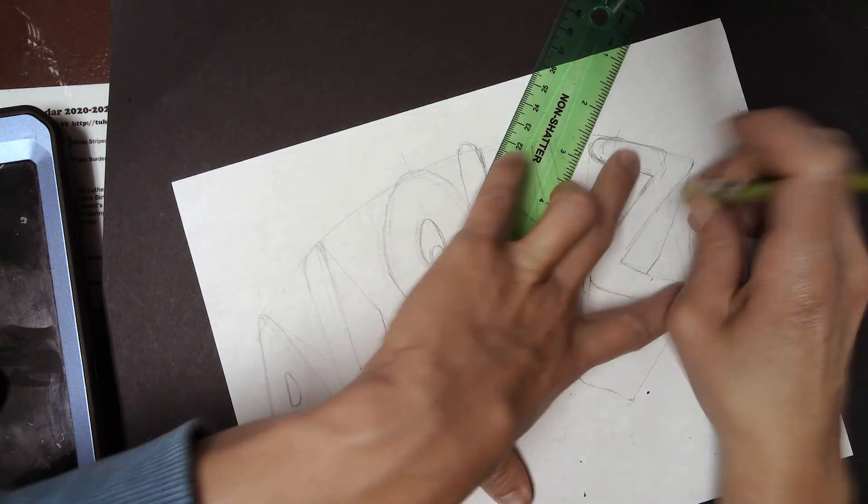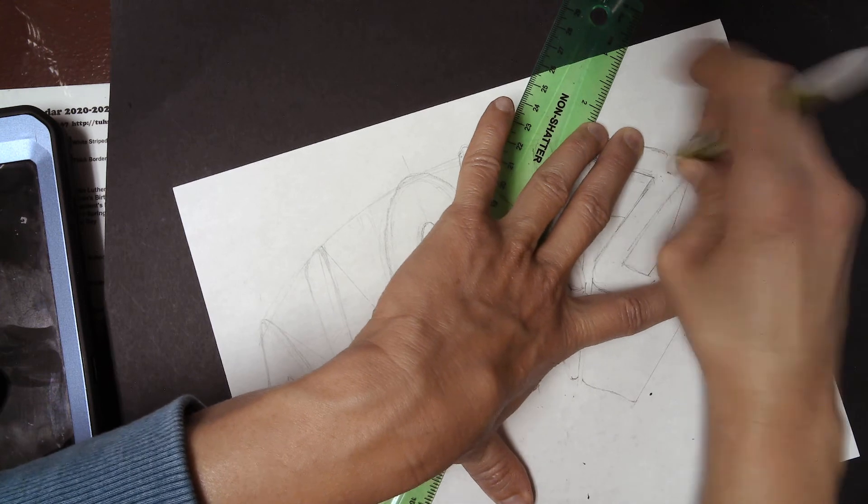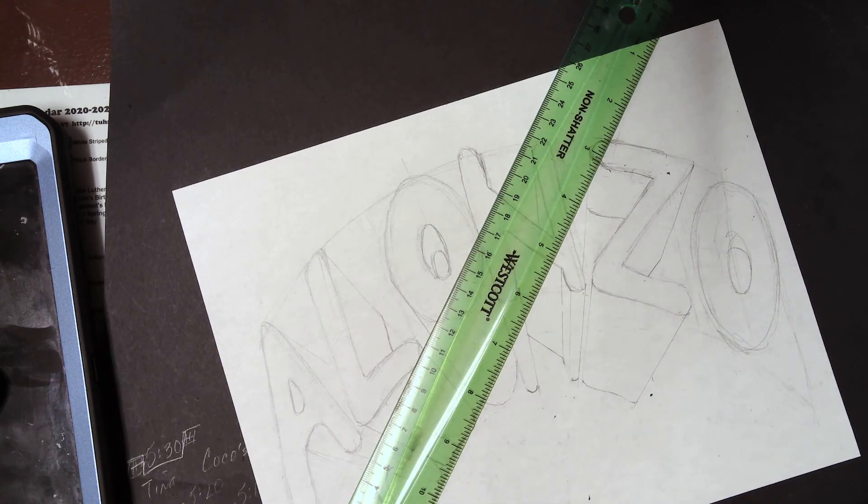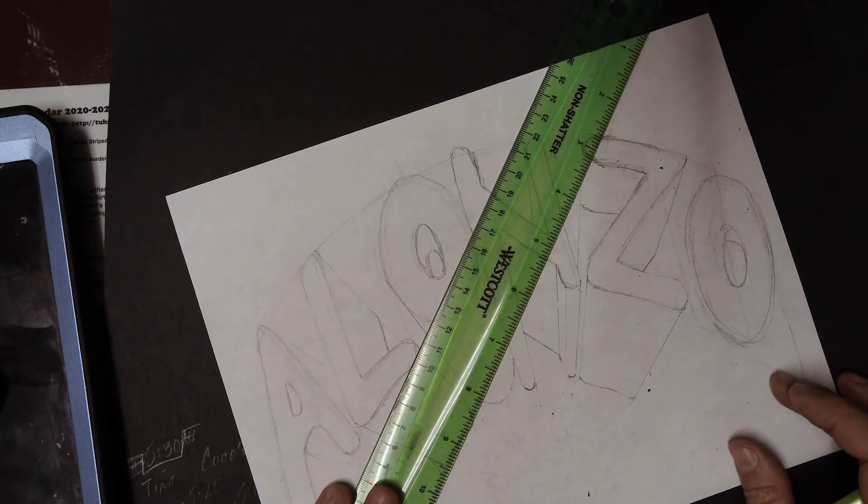Then I want to go out and find a spot for the side as well. So, I'm going to give it a pretty good amount of depth. Not too little, not too much. So, that's how you do the three-dimensional side there, okay?